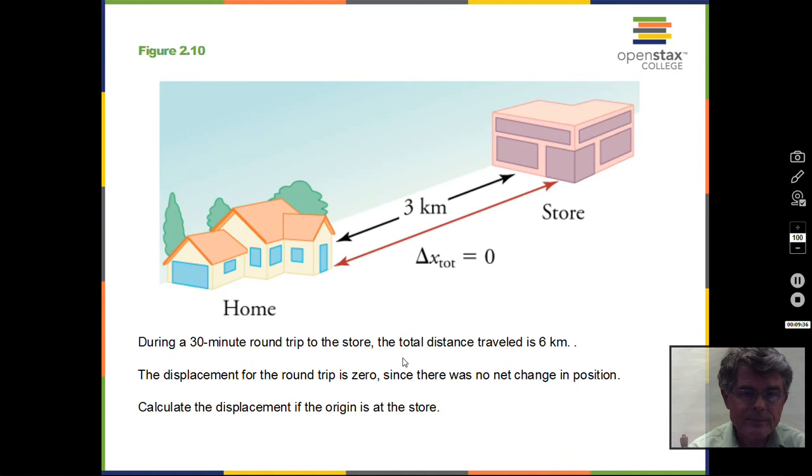So total distance traveled 6 kilometers there and back. Displacement is zero because we're ending at the starting point. What if we take the point of view of maybe it's the store delivering groceries to the home, so we have a person starting at the store going to the home and coming back. What distance does that person travel? You know, 6 kilometers. It's the same house, same store. What's the displacement? It's going to be zero. We're starting at the store, we're ending at the store.